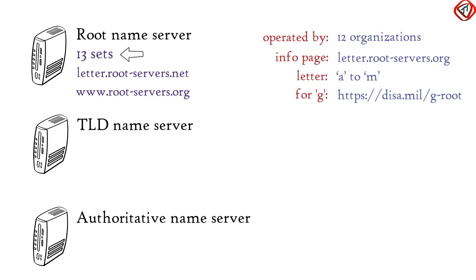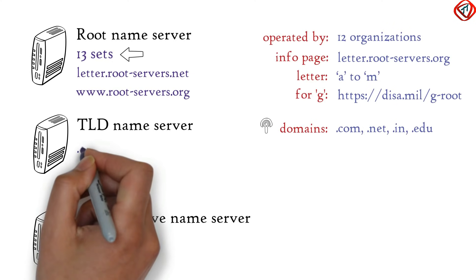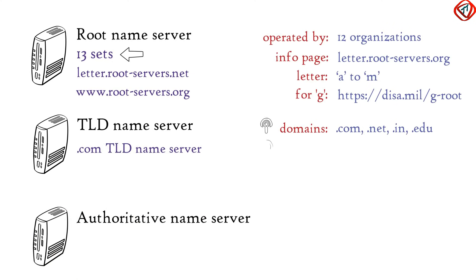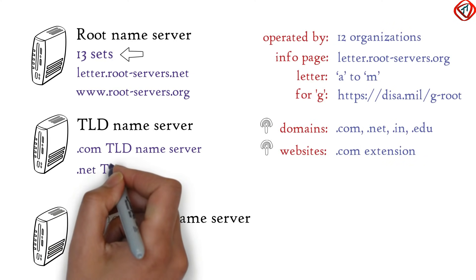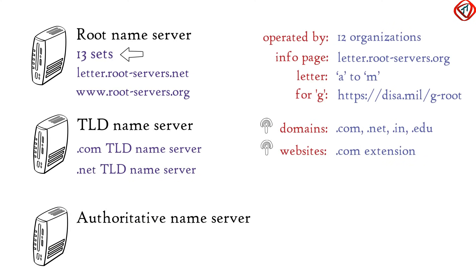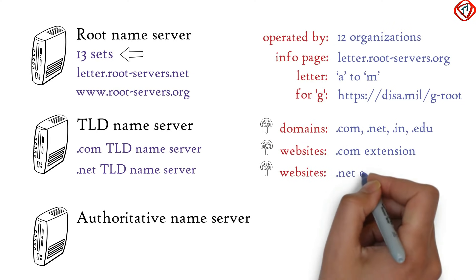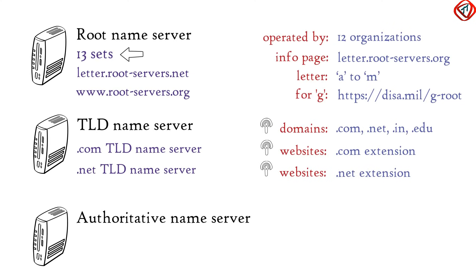TLD name server stores the information of all domains sharing a common domain extension. For example, the .com TLD name server stores the information of all websites ending with the .com extension; the .net TLD name server stores information of all .net websites, and so on.